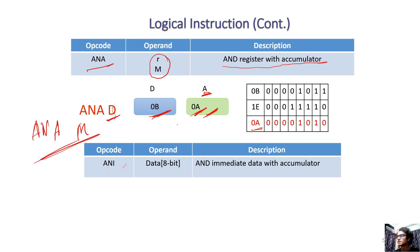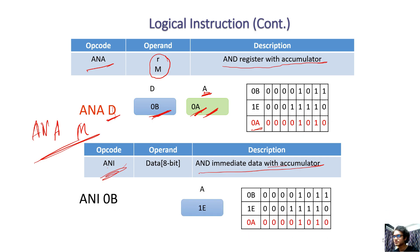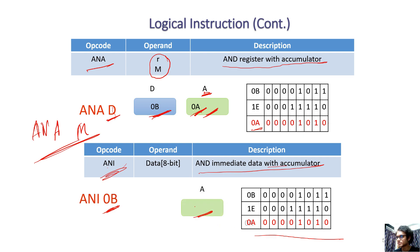Memory as well — the memory location result is saved in the accumulator. ANA with immediate data and accumulator — our immediate data accumulator as well. So the result is 1e, so the result is 0a. 0a, so the result is 0a.